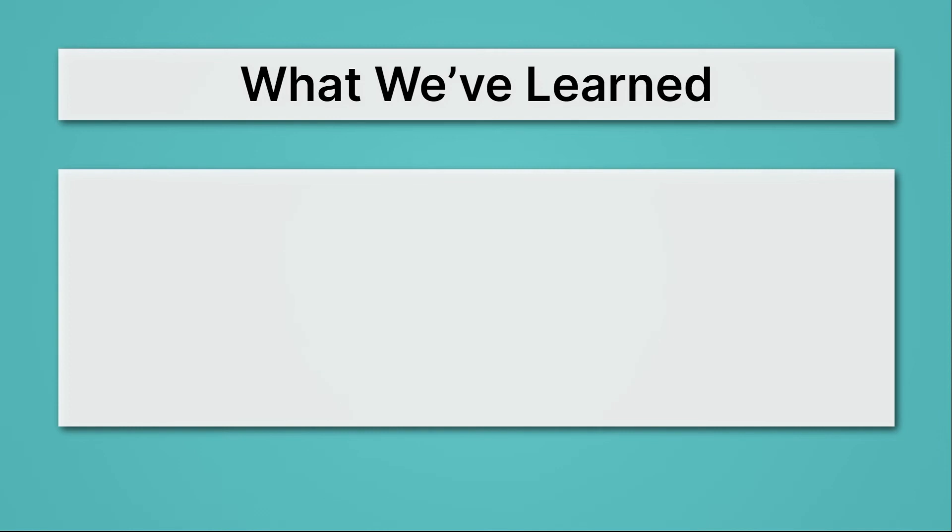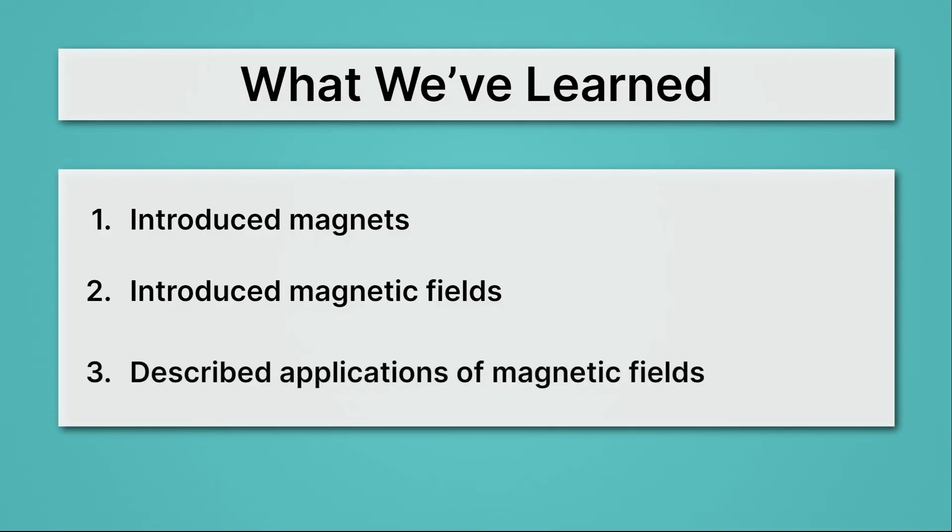Let's review what we've learned. First, we introduced magnets. We said they always have two poles, a north and a south, and that like is repelled by like, and that opposites attract. Then we introduced magnetic fields, which we said always curve towards the south, and they show us the direction and strength of the magnetic force. Lastly, we described applications of magnetic fields, like generators.